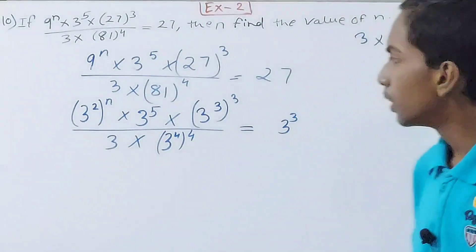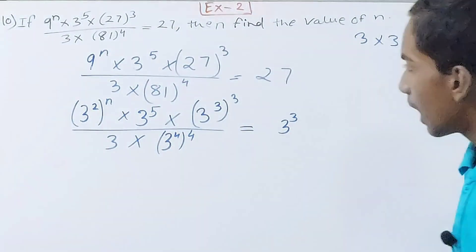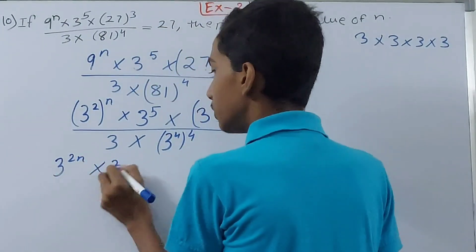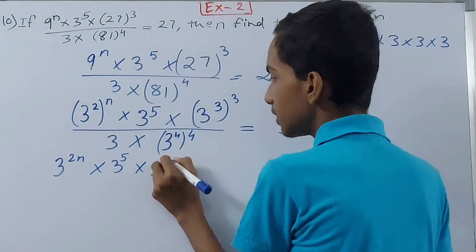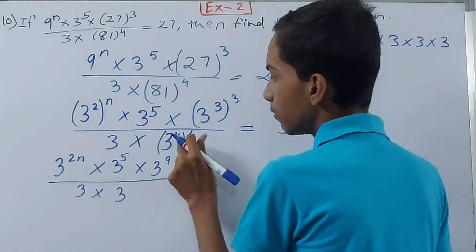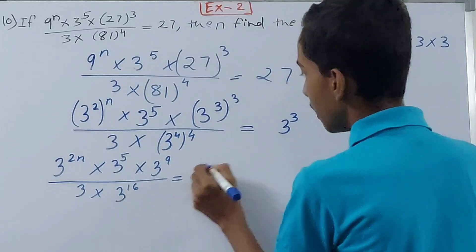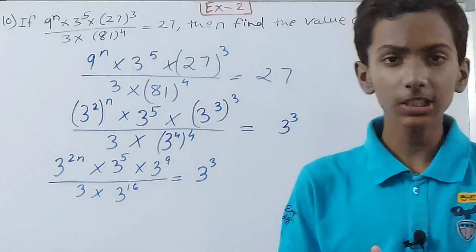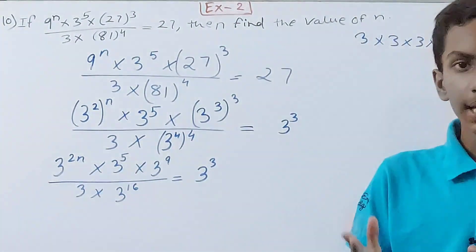Now we open the brackets. We get 3 to power 2n, into 3 to power 5, into 3 to power 3 times 3 equals 9 — in the numerator — upon 3 into 3 to power 4 times 4 equals 16, equal to 3 cubed. Now all the bases are 3 everywhere — only 3 in the base throughout.